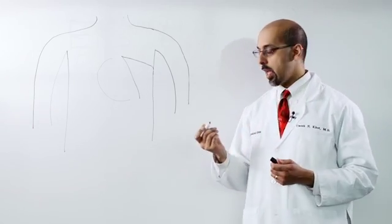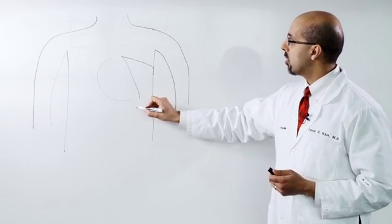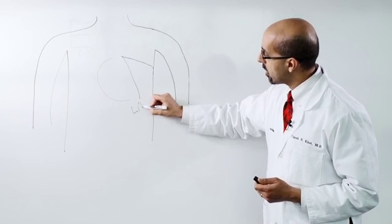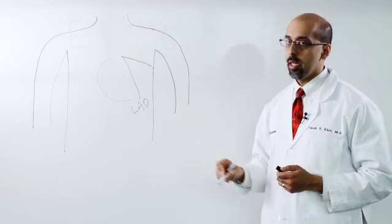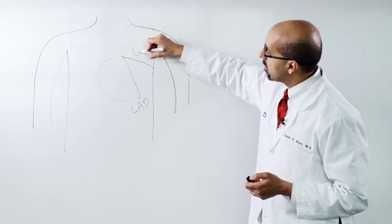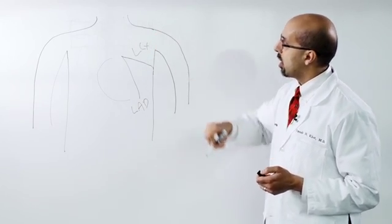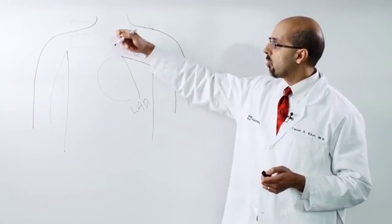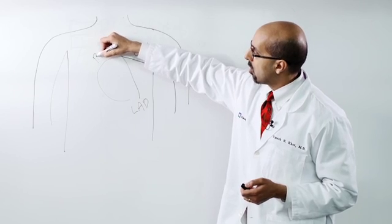These arteries all have individual names. This front artery is called the left anterior descending, or LAD. The second artery that goes to the side is called the left circumflex. And the artery on the other side is called the right coronary artery, or RCA.